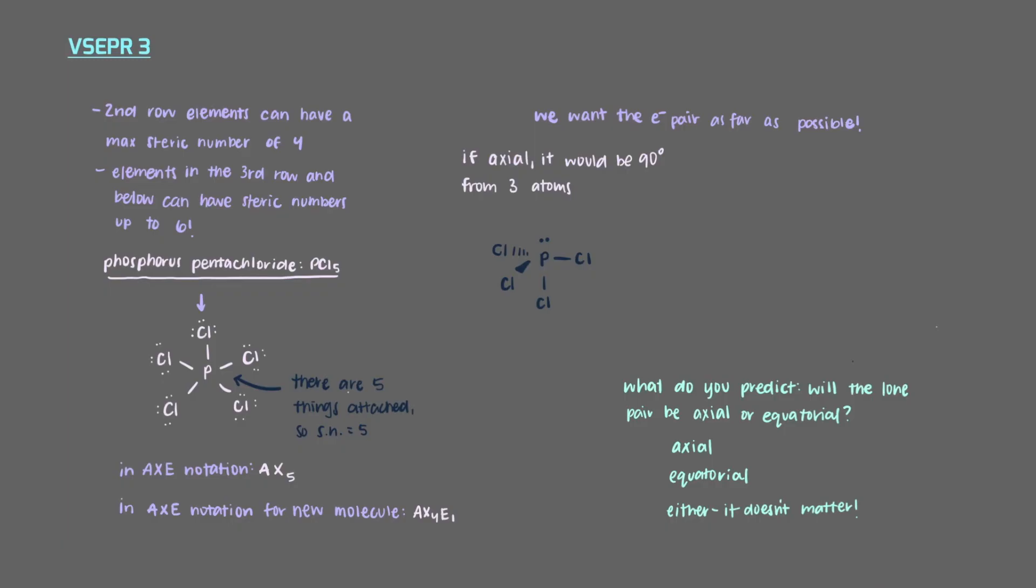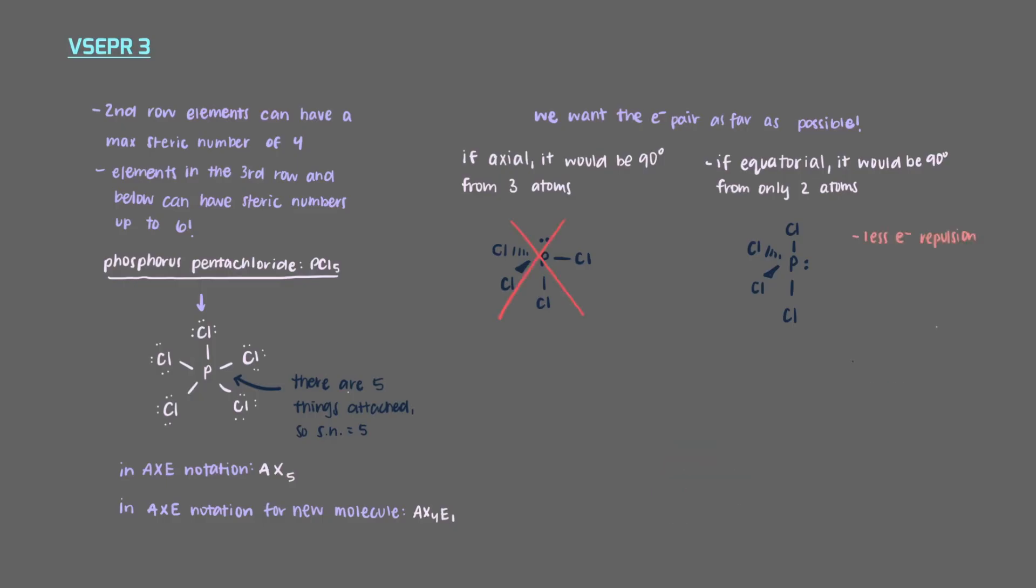If we were to put the lone electron pair at an axial position, then it would be 90 degrees from the three chlorine atoms. But if we put the lone electron pair at an equatorial position, it would only be 90 degrees from two chlorine atoms. That's less electron repulsion and more stable.